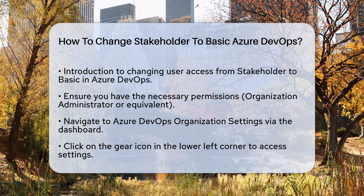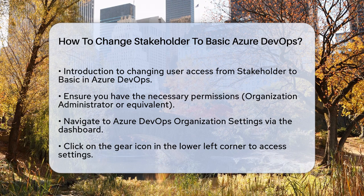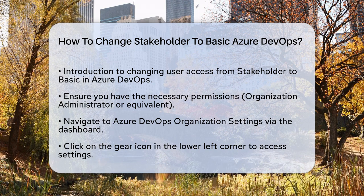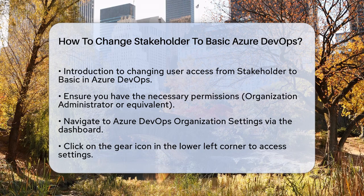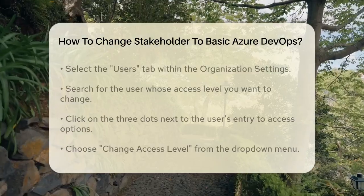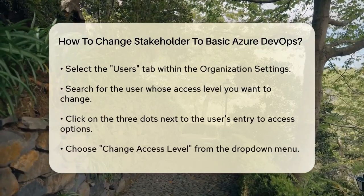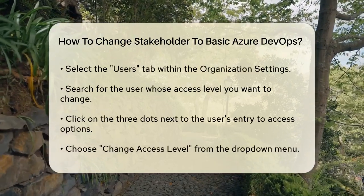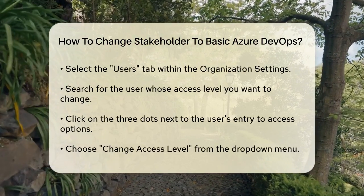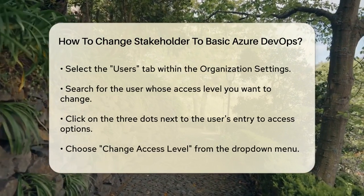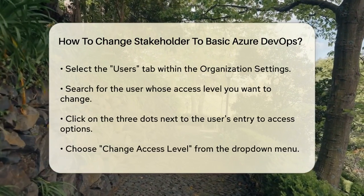To start, navigate to your Azure DevOps organization settings. You can do this by going to your Azure DevOps dashboard and clicking on the gear icon, usually found in the lower left corner. Once you're in the organization settings, click on the Users tab.